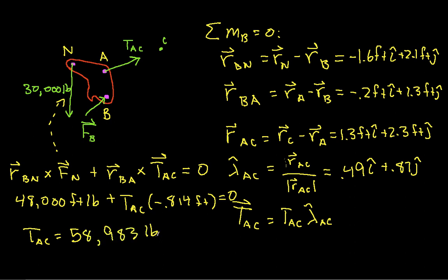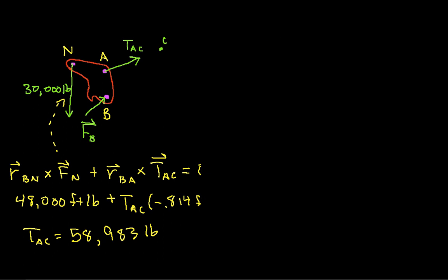Okay. So by solving for the moments, or the moment, the sum of the moments about B equals 0, we now have T_AC. The next thing to do is find F_B. And so I'll clean up some space here. To find F_B, we'll use the sum of the forces, and these are vectors, is equal to 0.